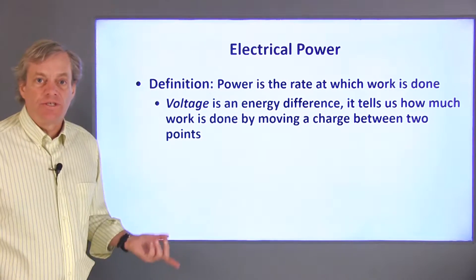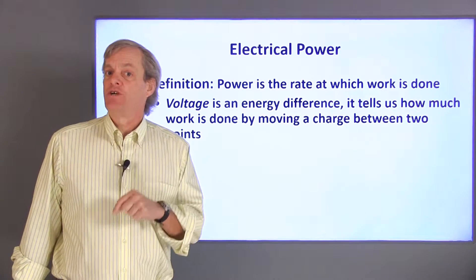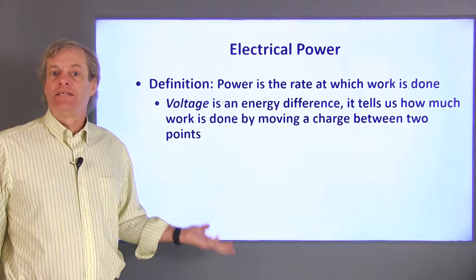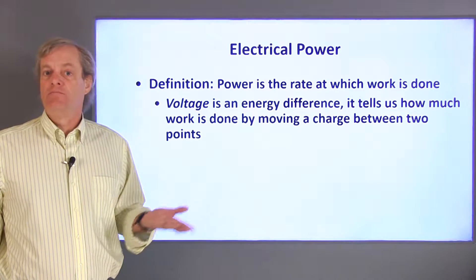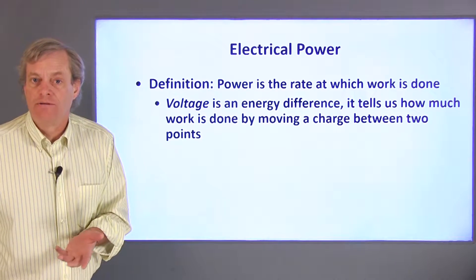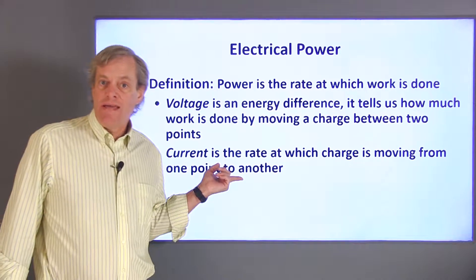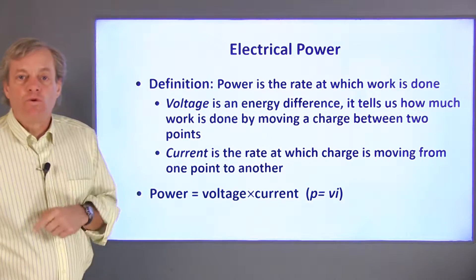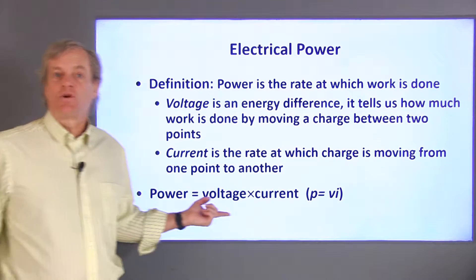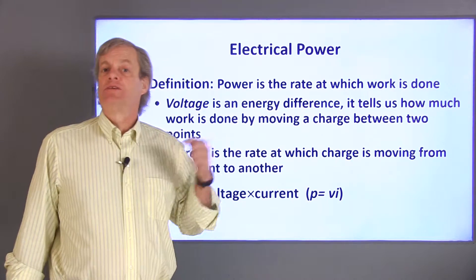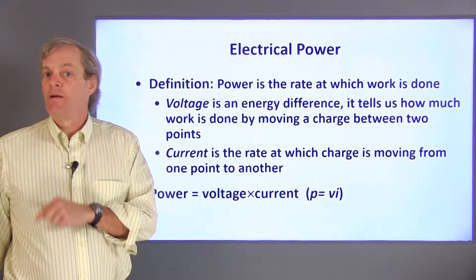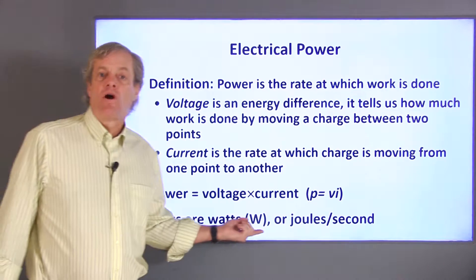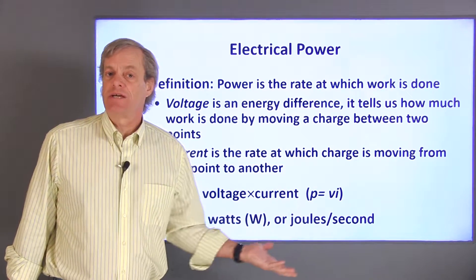For electrical systems, voltage is an energy difference a charge has at two different points. Another way to look at this is that voltage is the work done in moving a charge from one point to another. Current is the rate at which charge is moving between two points. Therefore, electrical power is the product of voltage and current — this is the rate at which work is being done by moving charges from one voltage level to another. The units of power are watts, which are joules per second.